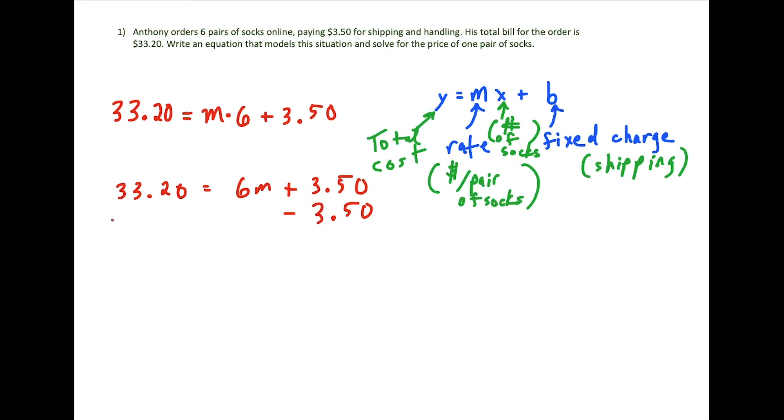So we're going to subtract 3.50 on both sides. And just a little commentary here for these questions, the hardest thing is setting up the equation; solving the equation is not so bad. But you just have to know where the variables go when you're setting these up. So these two cancel. We could use a calculator, but this isn't so bad. We want to practice our old school math. So we could change 33 to a 32. That makes this a 12. So then we have 12 minus 5 is 7, and now 32 minus 3 is 29. So we have 29.70 equals 6m.